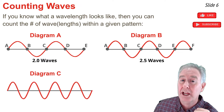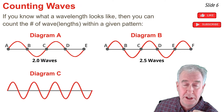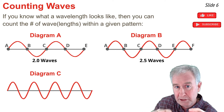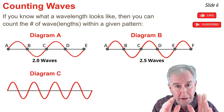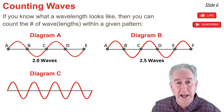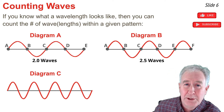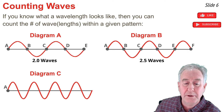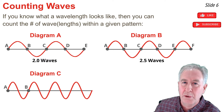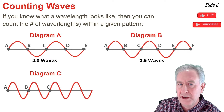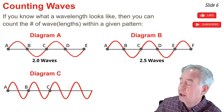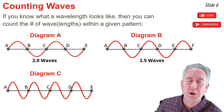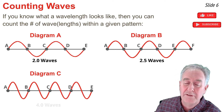Now let's pick up the pace and count by full waves in diagram C. A full wave goes: start at rest, up to crest, down to rest, down to trough, back up to rest. Starting at A and going to B is one full wave, B to C is a second, C to D is a third, and D to E is a fourth. Four full wavelengths counted in diagram C.